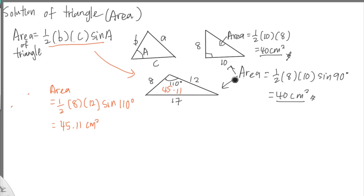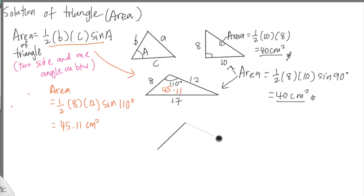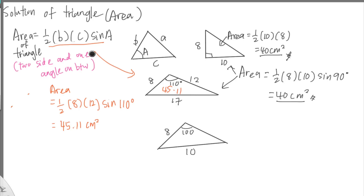However, this formula has a condition: you must have two sides and the angle between them — the included angle. For example, if you have a triangle where the 100-degree angle is given but the sides of length 8 and 10 are not adjacent to it, you cannot directly use the area formula. You must first find another angle.